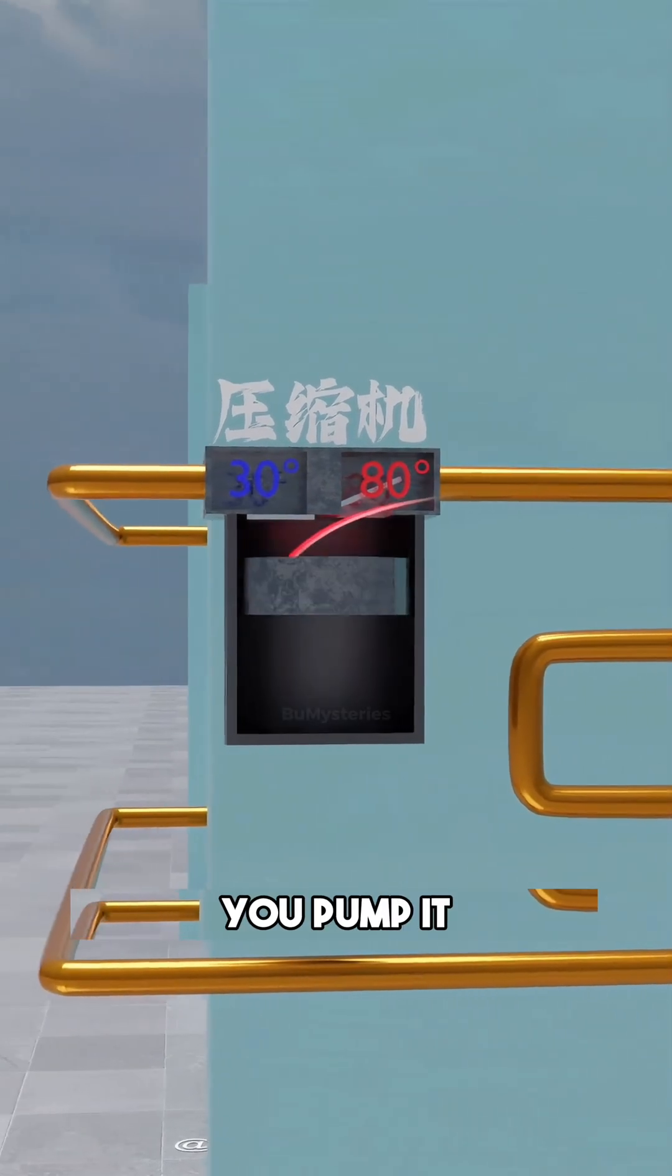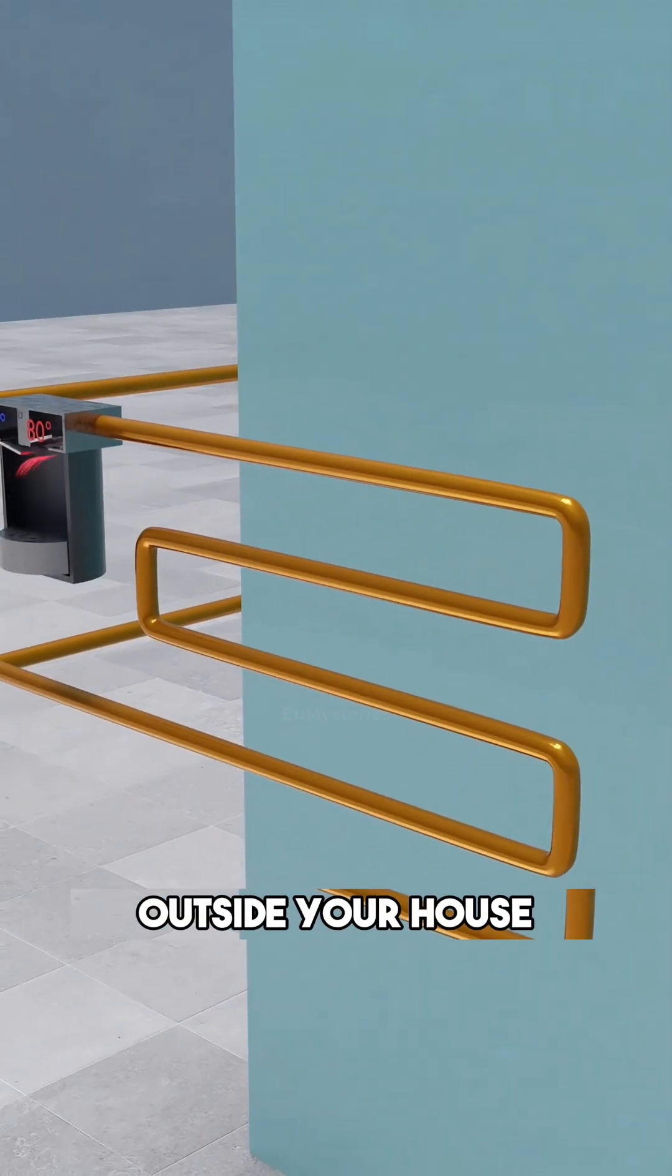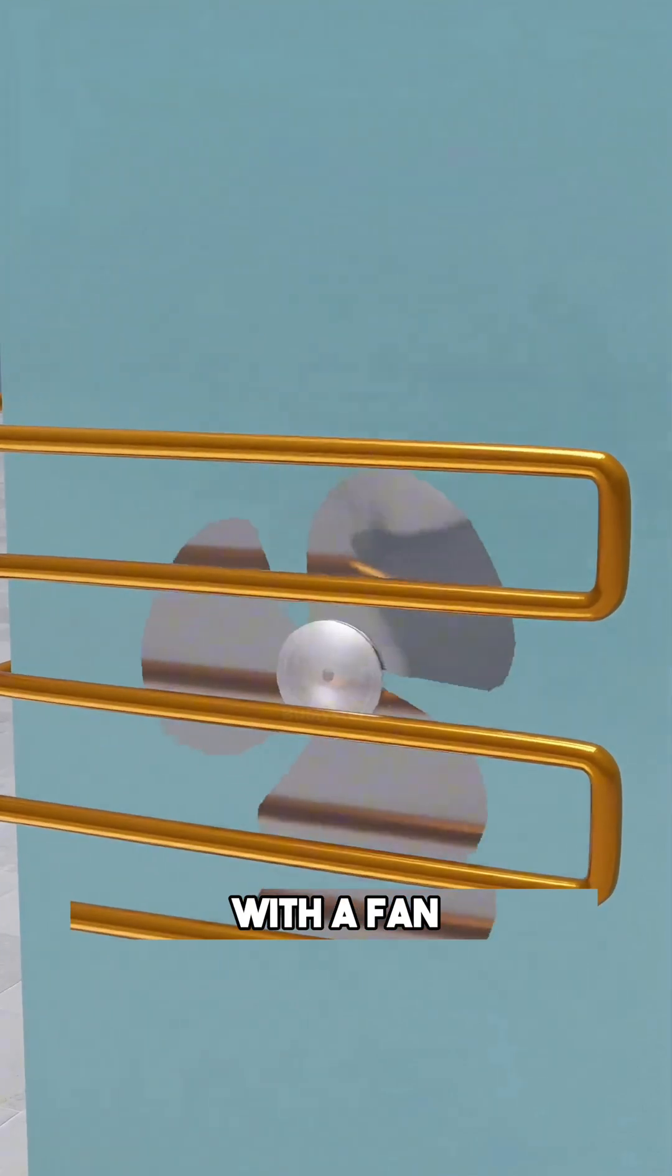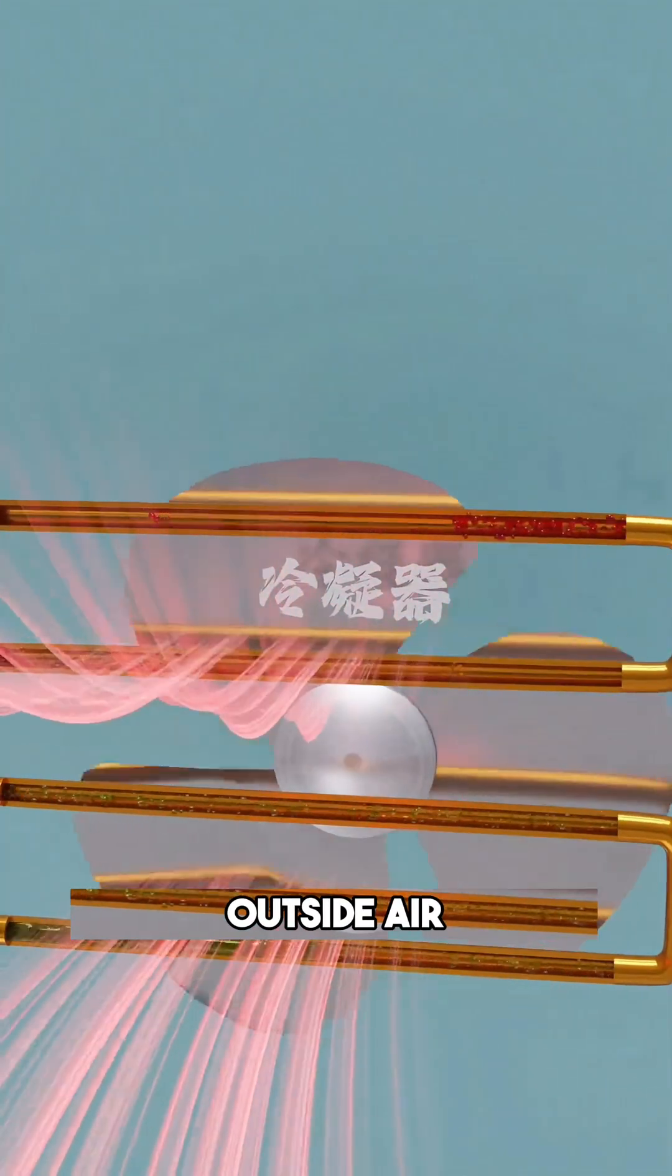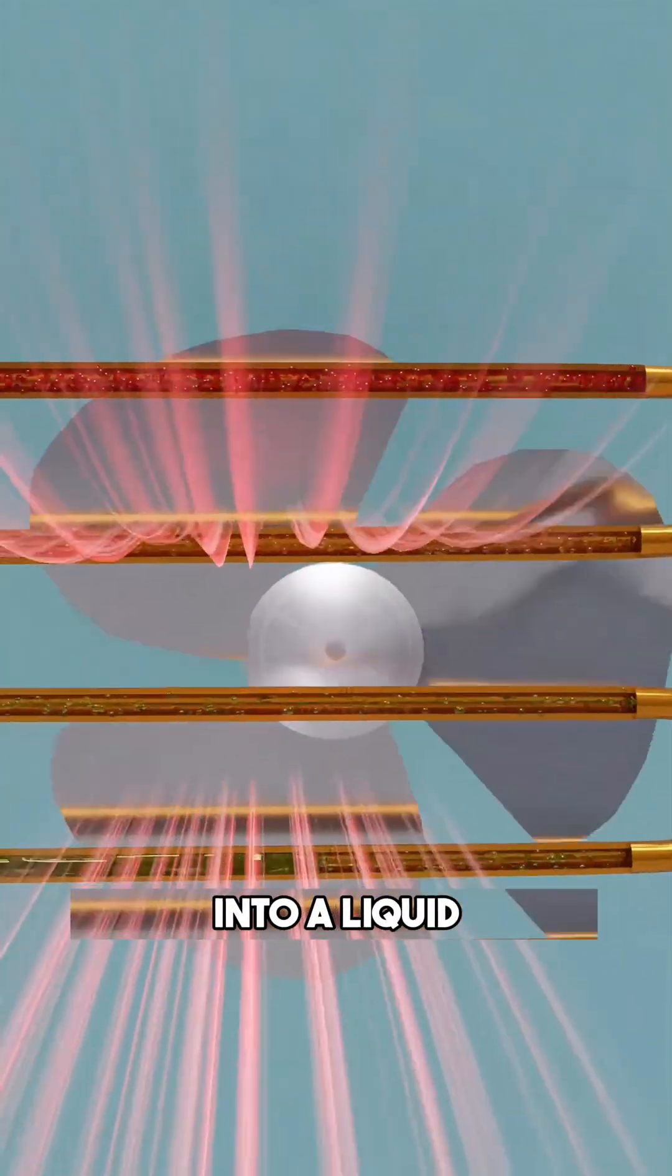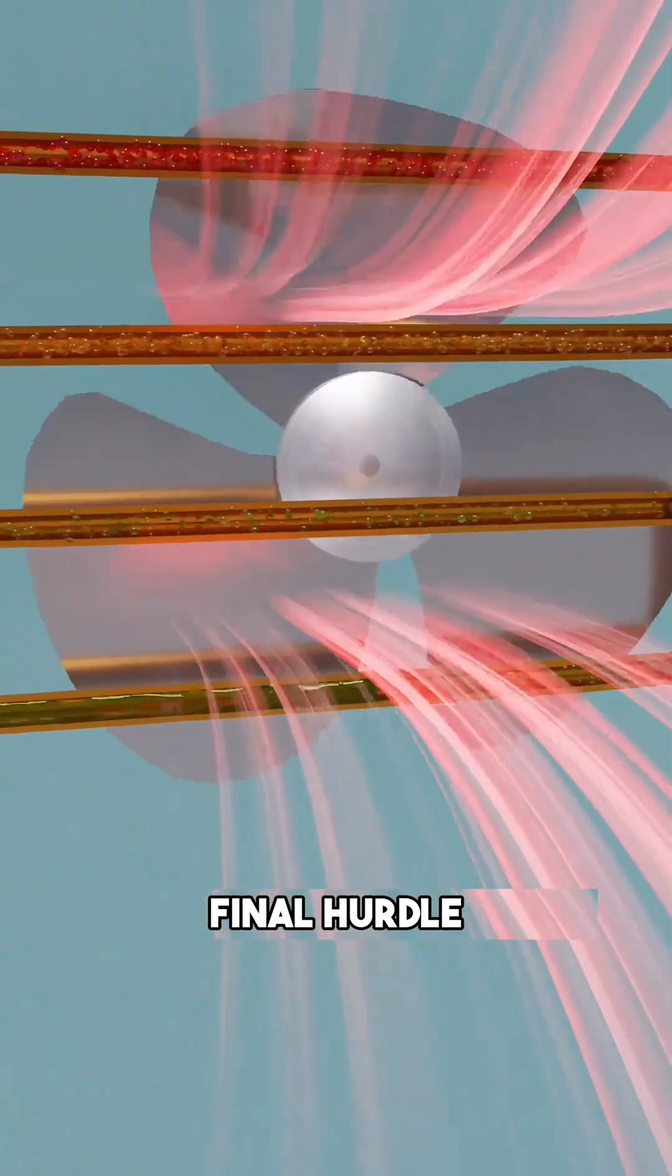To cool it down, you pump it through a second set of coils outside your house and blast it with a fan. This is the condenser. As the heat escapes into the outside air, the high-pressure gas cools and condenses back into a liquid. But there's one final hurdle.